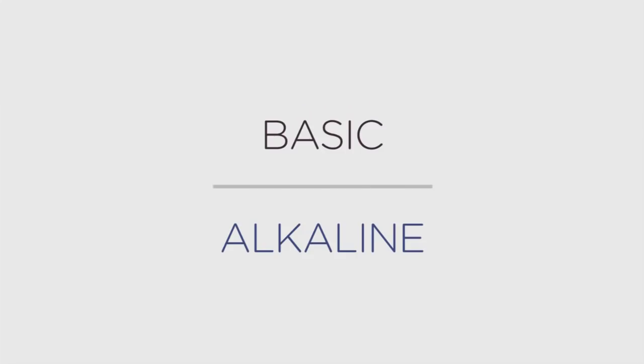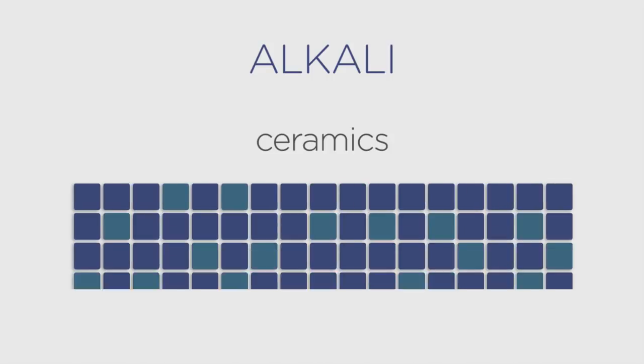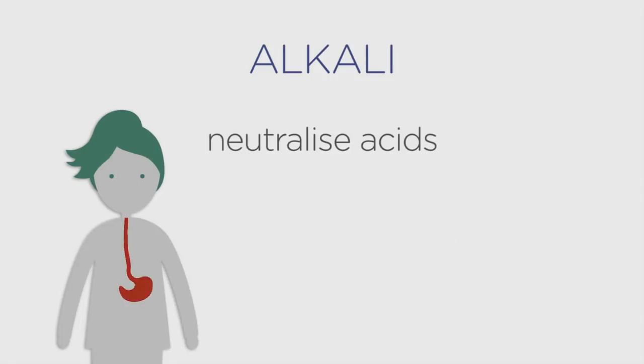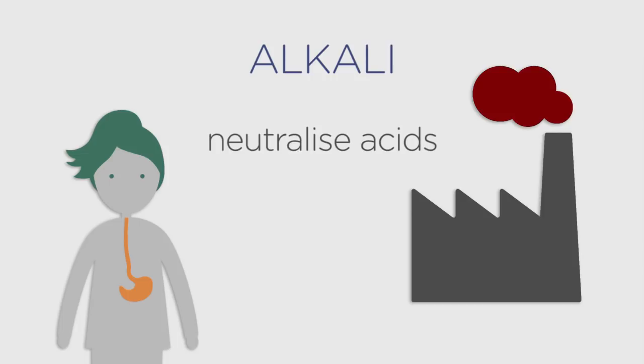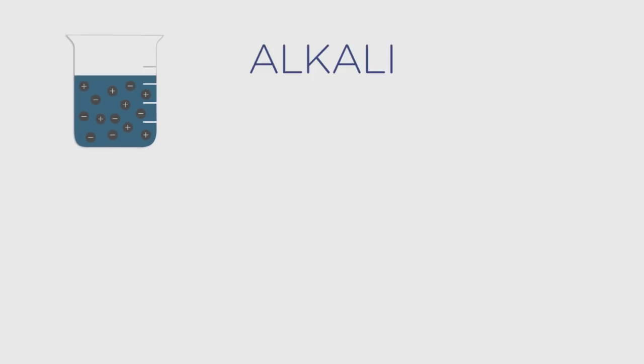In this video we're going to learn about what makes things alkaline or basic. Alkaline materials are usually used to make cleaning products like soap and ceramics such as tiles. They neutralize acids and so can be used to ease indigestion and remove harmful gases from industrial chimneys that contribute to acid rain. To test for an alkali, expose it to red litmus paper — an alkali should turn the paper blue.